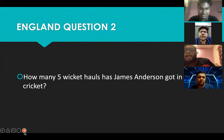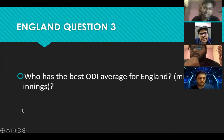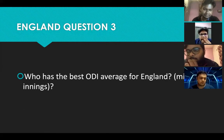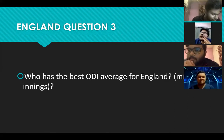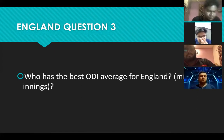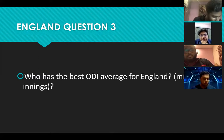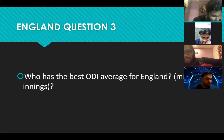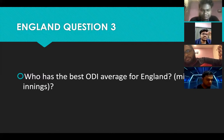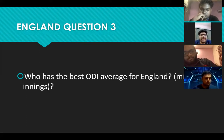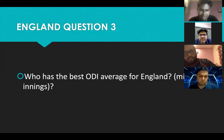Question three: who has the best ODI average for England, minimum 15 innings? The best ODI average for England — is it Joe Root? Correct! Brilliant. Eight points.